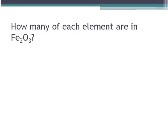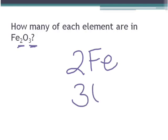In this one, we have Fe2O3. So if we look at the little subscripts, the little two after the Fe means that we have two irons, and the little three means that we have three oxygens.